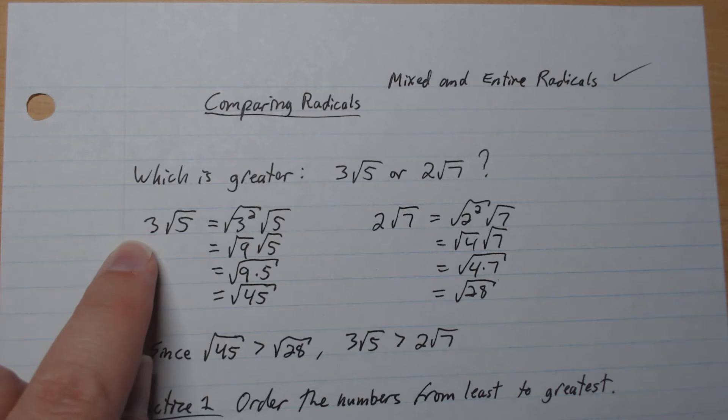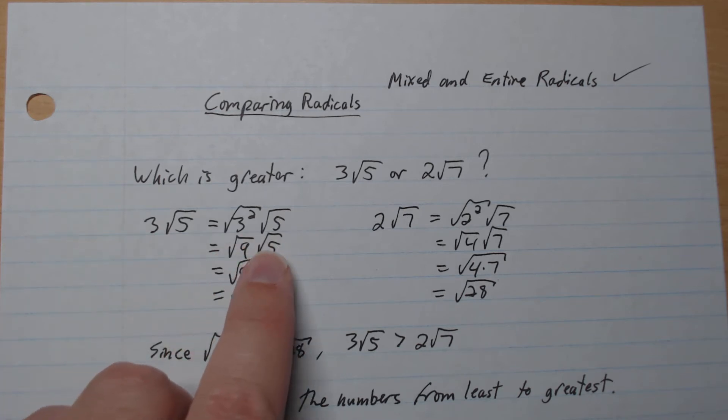So here we have square root 5, so we're going to go square square root on the 3 like that. This gives root 9 root 5, which gives root 9 times 5, which gives root 45.